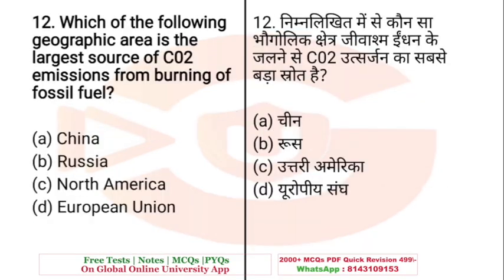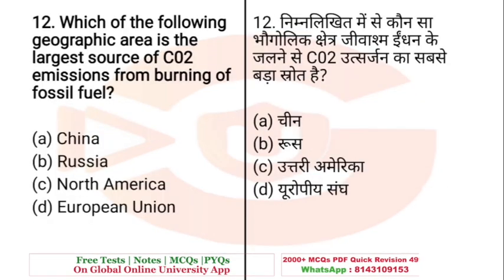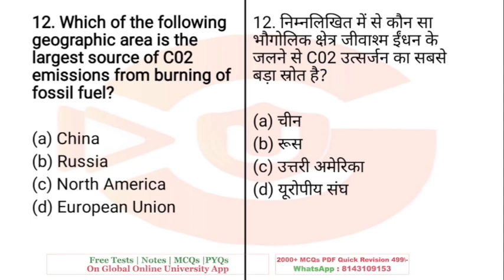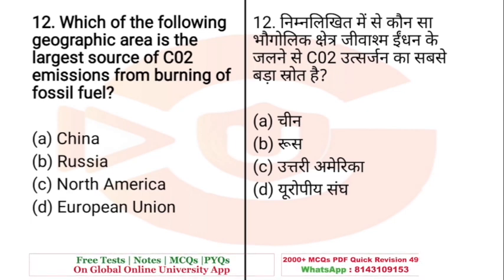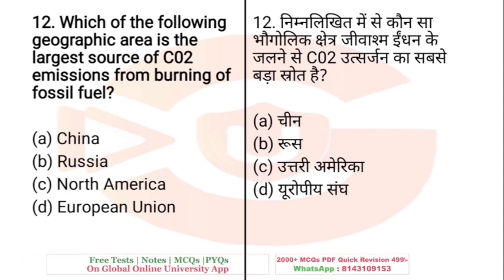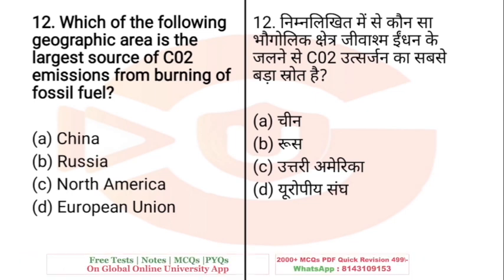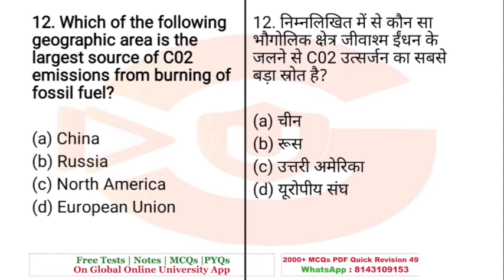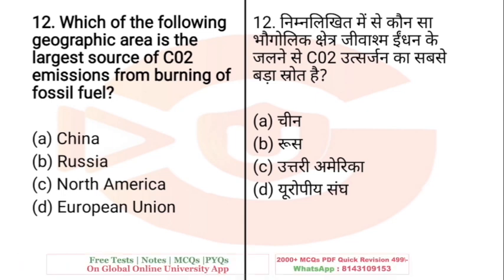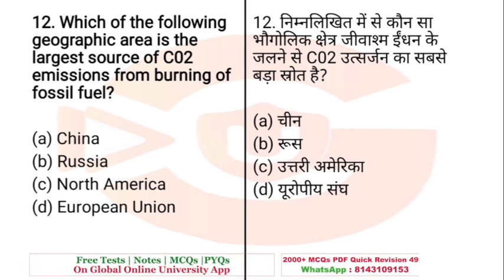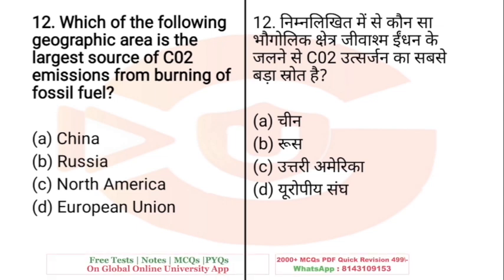Question: Which of the following geographic areas is the largest source of CO2 emissions from burning of fossil fuels? A. China, B. Russia, C. North America, D. European Union. The right answer is North America.